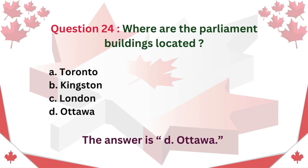Question 24: Where are the Parliament buildings located? A. Toronto. B. Kingston. C. London. D. Ottawa. The answer is D. Ottawa.